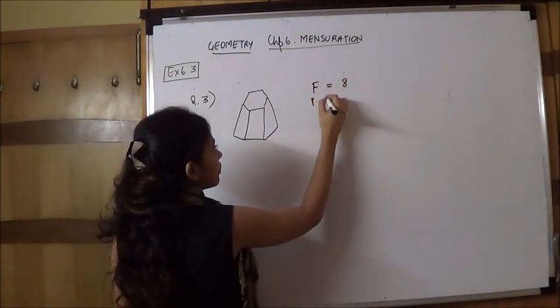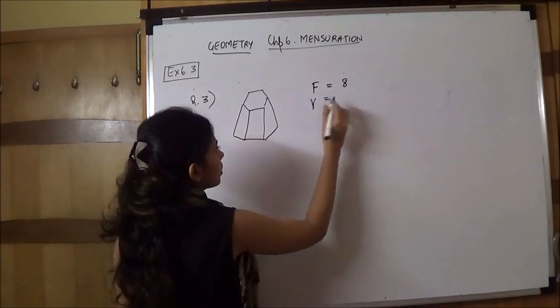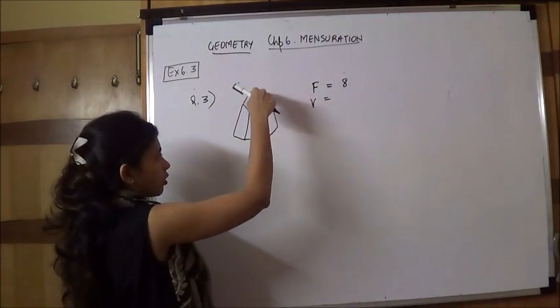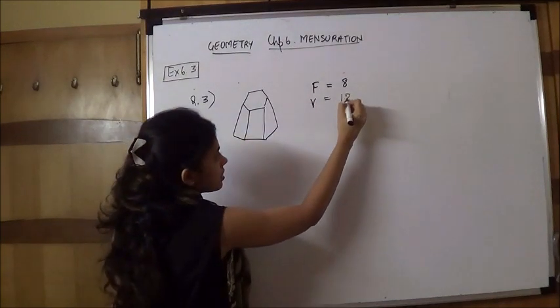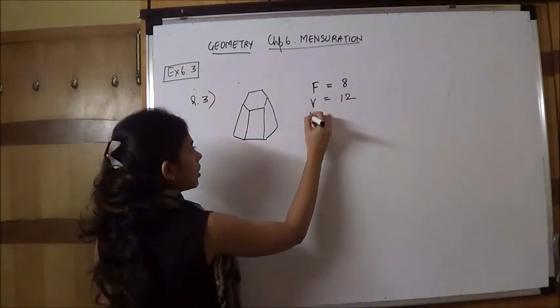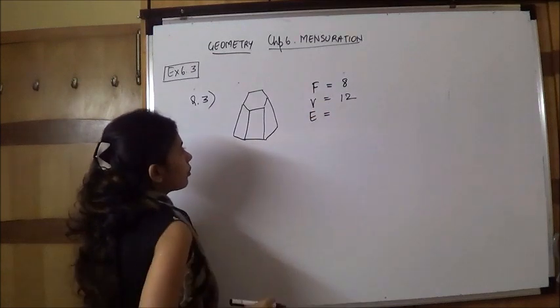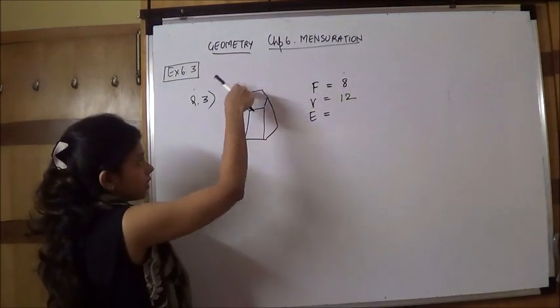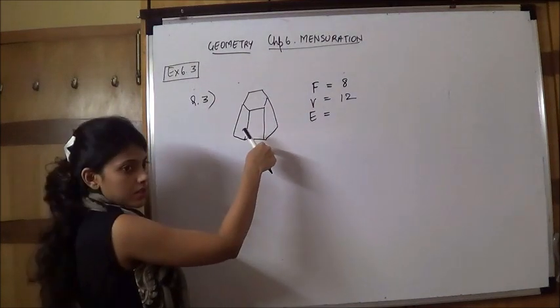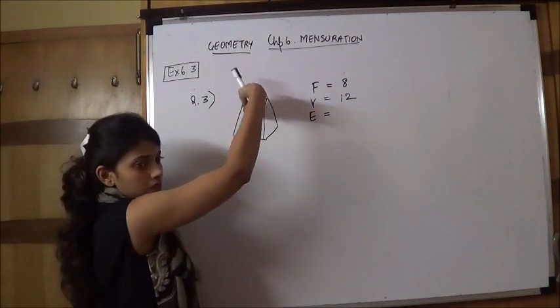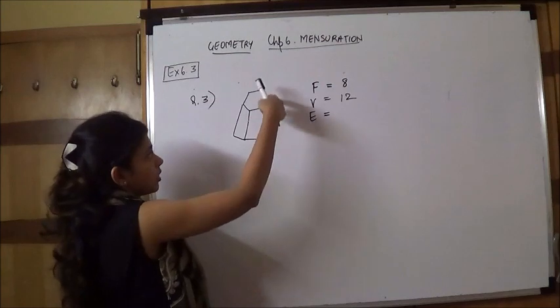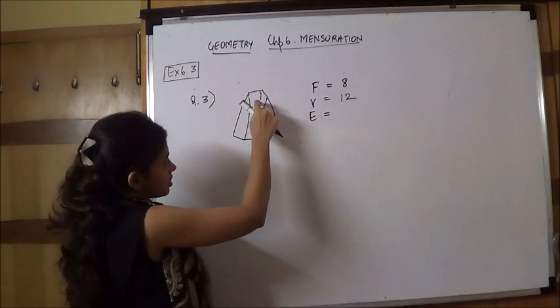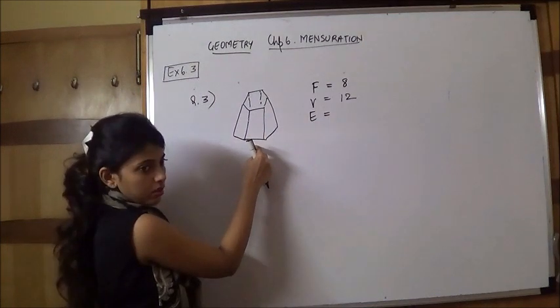Then number of vertices: 1, 2, 3, 4, 5, 6. 6 on the top and 6 in the base, so 6 plus 6 is 12. Next is E, number of edges means sides. So there are 6 sides in the top, 6 sides in the base, and 6 vertical sides. So 6 plus 6 plus 6 is 18.